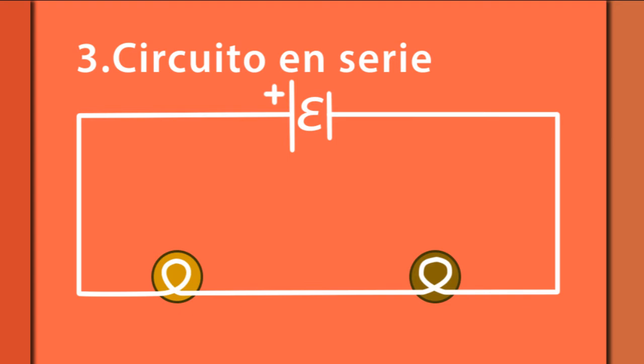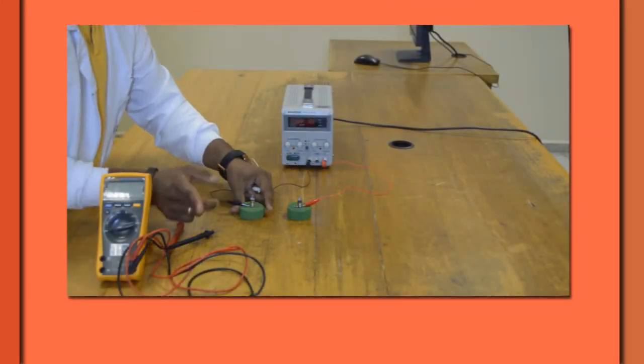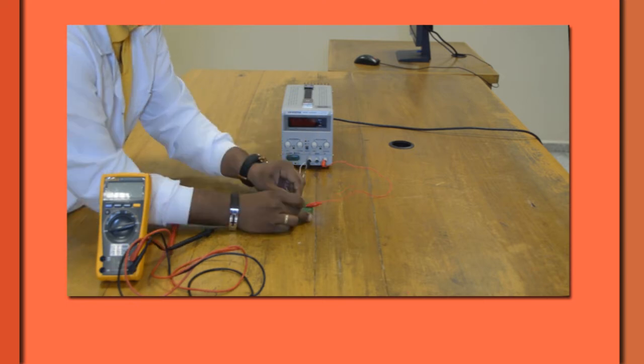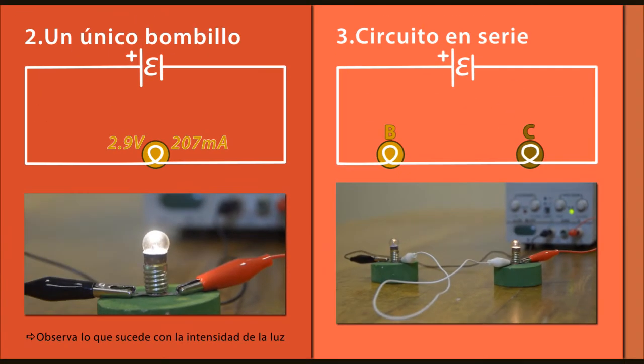Los bombillos B y C están uno a continuación del otro, formando un circuito en serie. Observen con atención y de manera cualitativa la intensidad de iluminación y compárenla con la anterior.